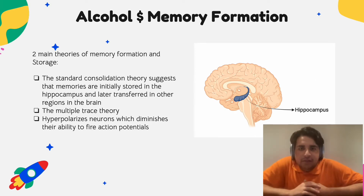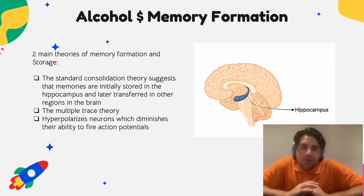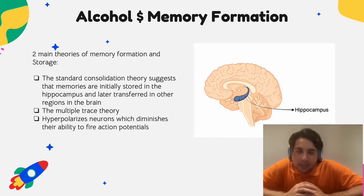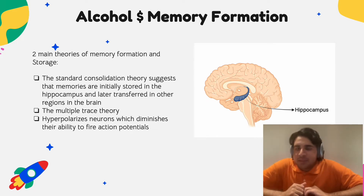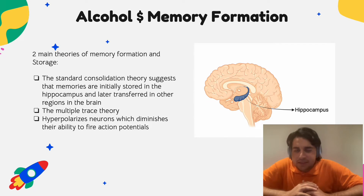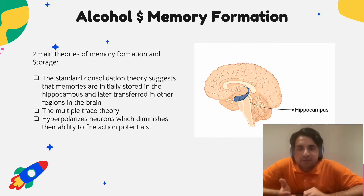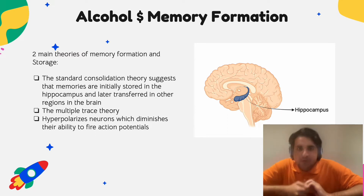Now that we have an understanding of how alcohol impacts the brain, we can go into more detail about the physiological consequences of drinking. First, let's talk about alcohol and its impact on memory formation. Have you ever gone out, drank a bit too much, and the next day woke up hungover unable to remember a single detail from the night before? Alcohol is directly interfering with your ability to store or even form memories in the first place.